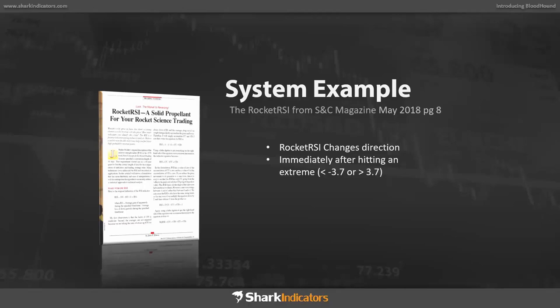This particular system is from Stocks and Commodities Magazine, which is a great source. They featured an indicator called the Rocket RSI, which is a kind of oscillating indicator. We're going to use that to generate some signals, throw it through an auto trader, and see what kind of results we can get. What we're going to do is take the Rocket RSI, get those points where it's hitting extremes and coming down or going up from those extremes, and then go into long and short positions.